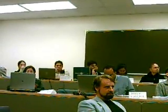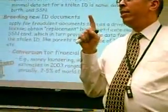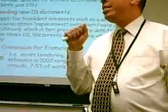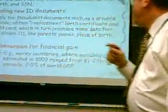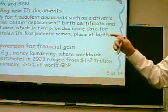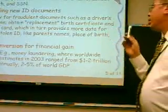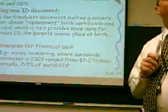Interestingly, money laundering estimates — the most recent estimate I can find is about 2003 — put the figure somewhere between $1 and $2 trillion. That's trillion dollars. A billion is nine zeros. A trillion is 12 zeros.